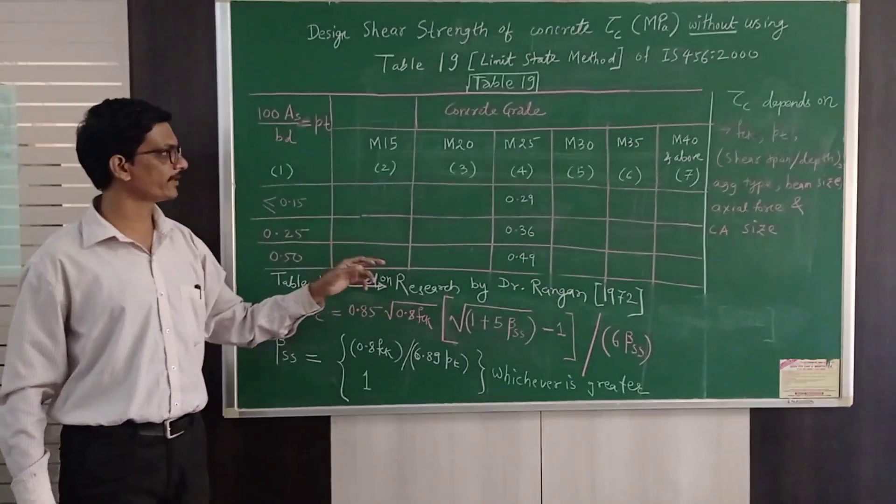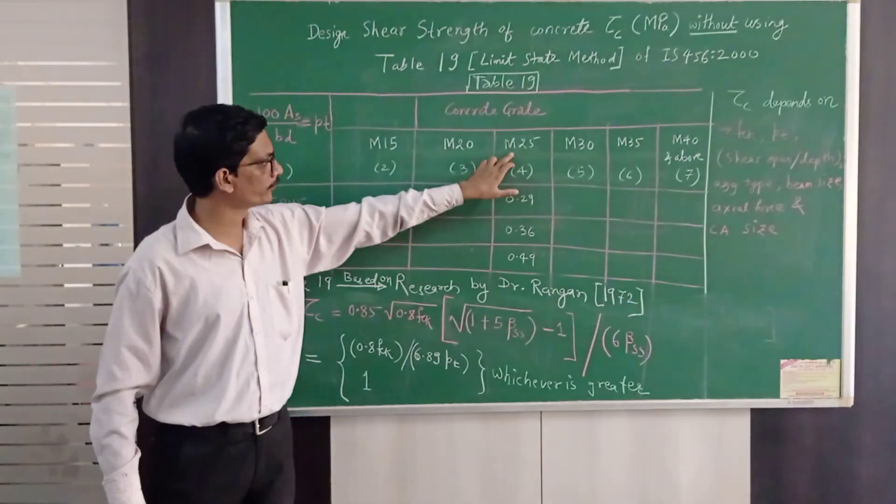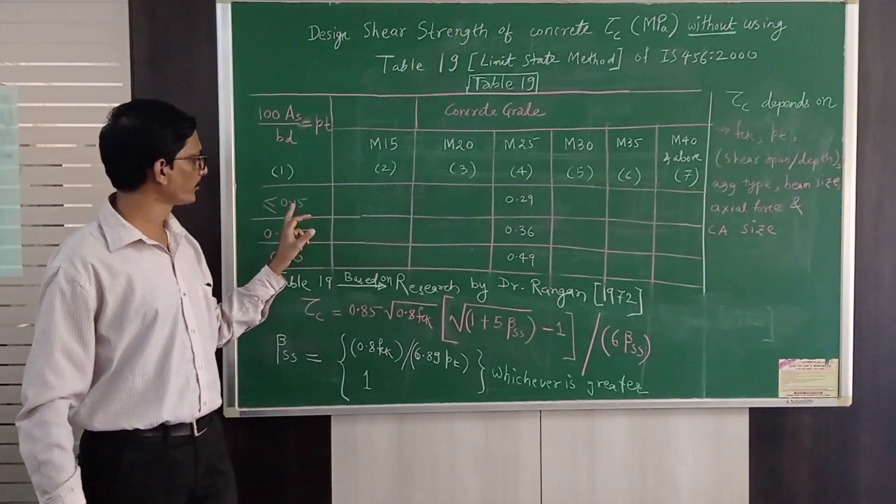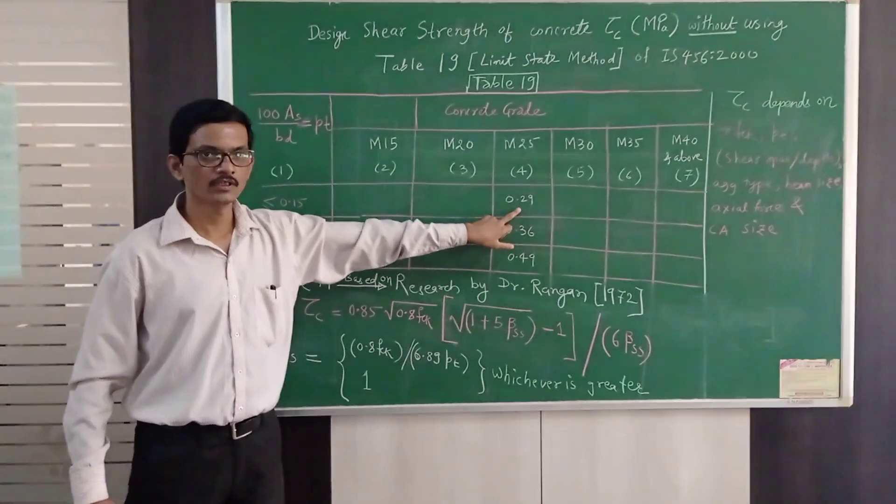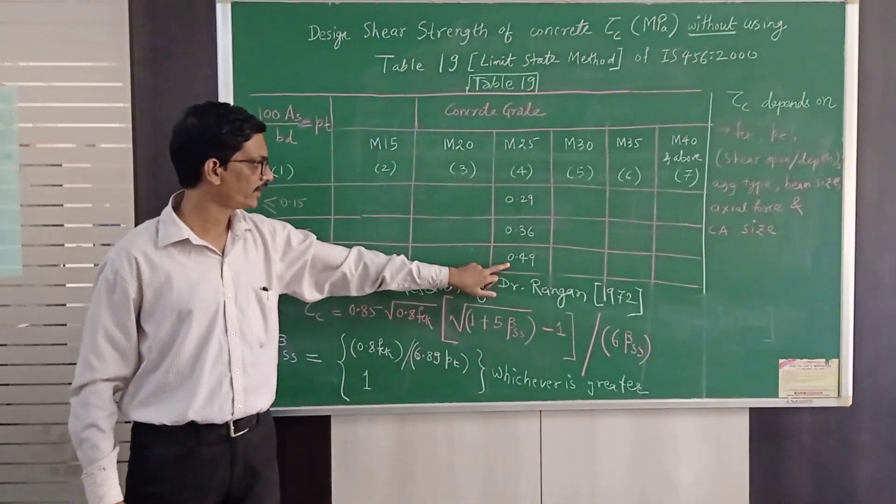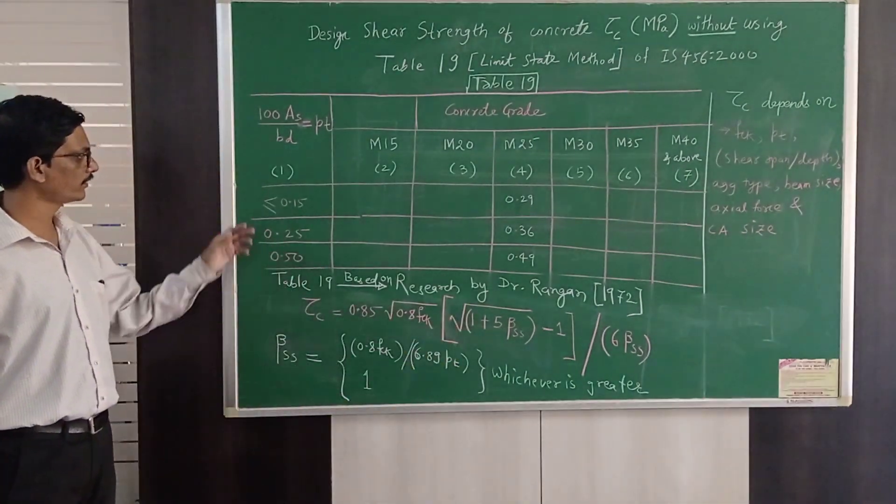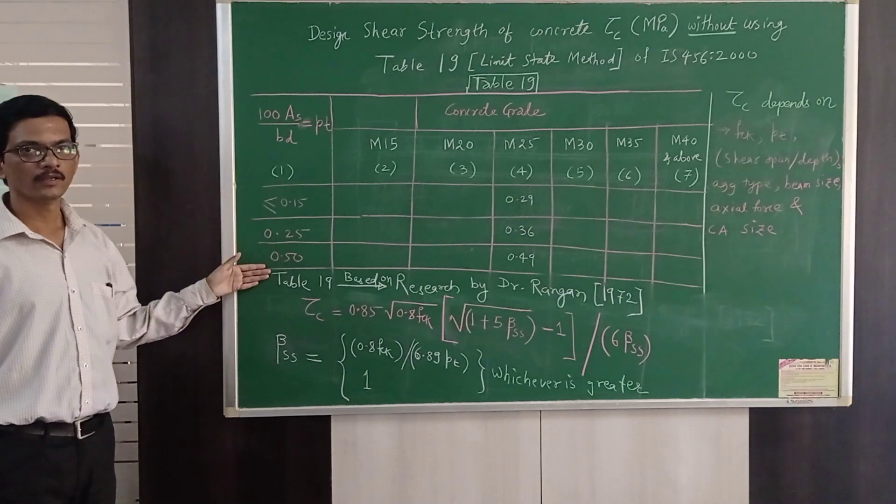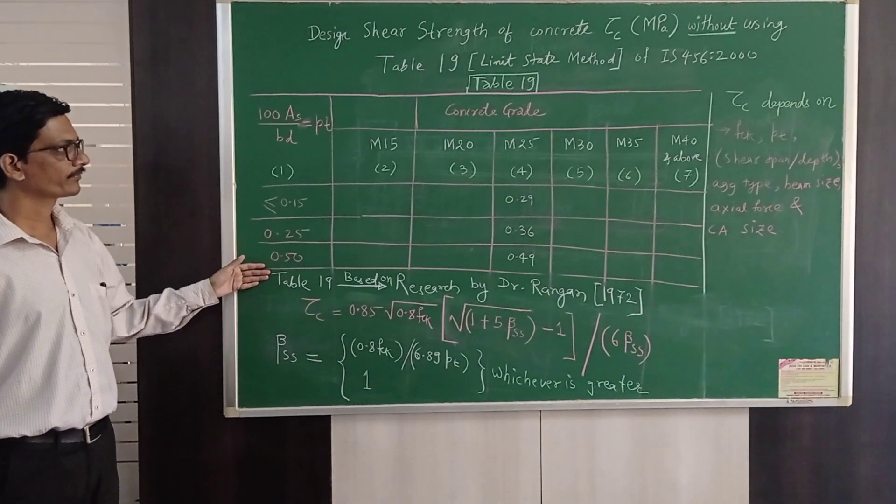Here also for demonstration purpose randomly I have taken M25 grade concrete and I have written the values of tau c that is 0.29 Newton per mm square, 0.36 Newton per mm square and 0.49 Newton per mm square for these 3 values of percentage of steel respectively.